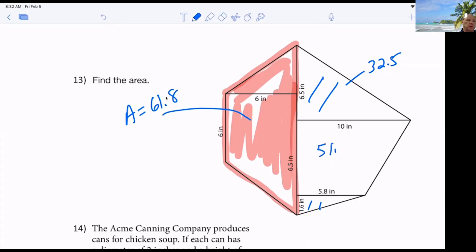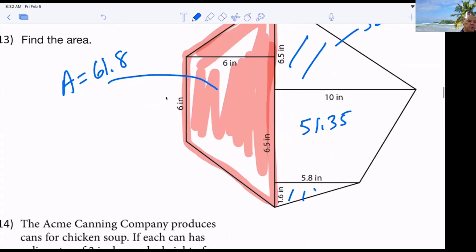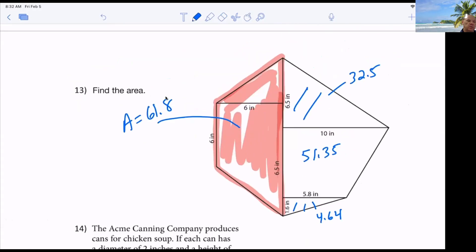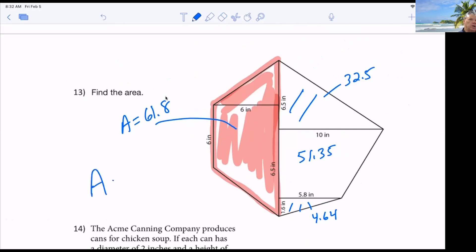And then the other triangle was? 4.64. 4.64. So the total area was roughly what? 150 point. Inches squared. Anybody have an issue with that?